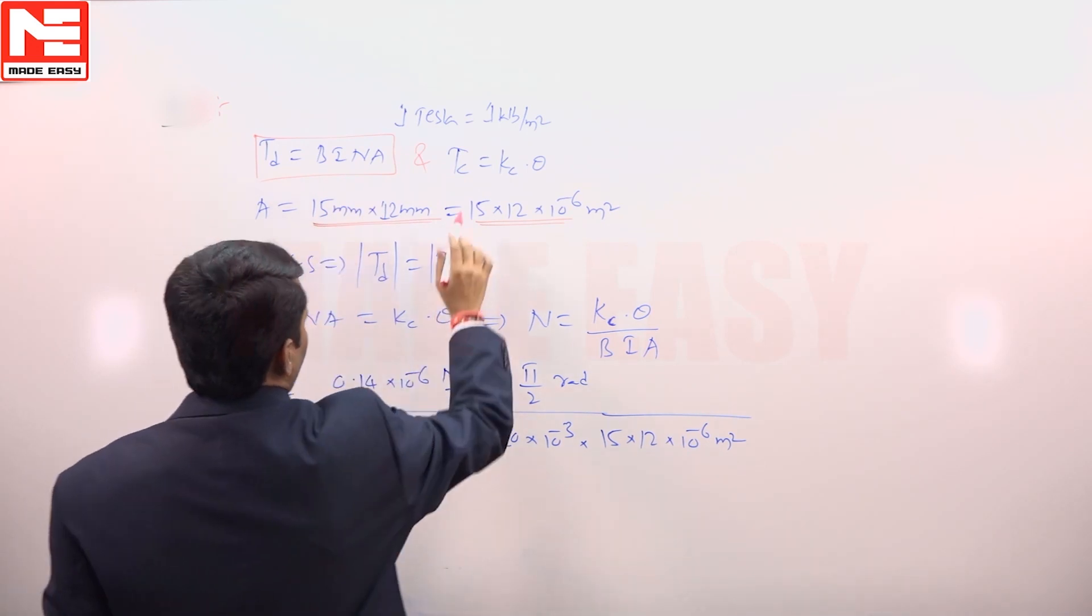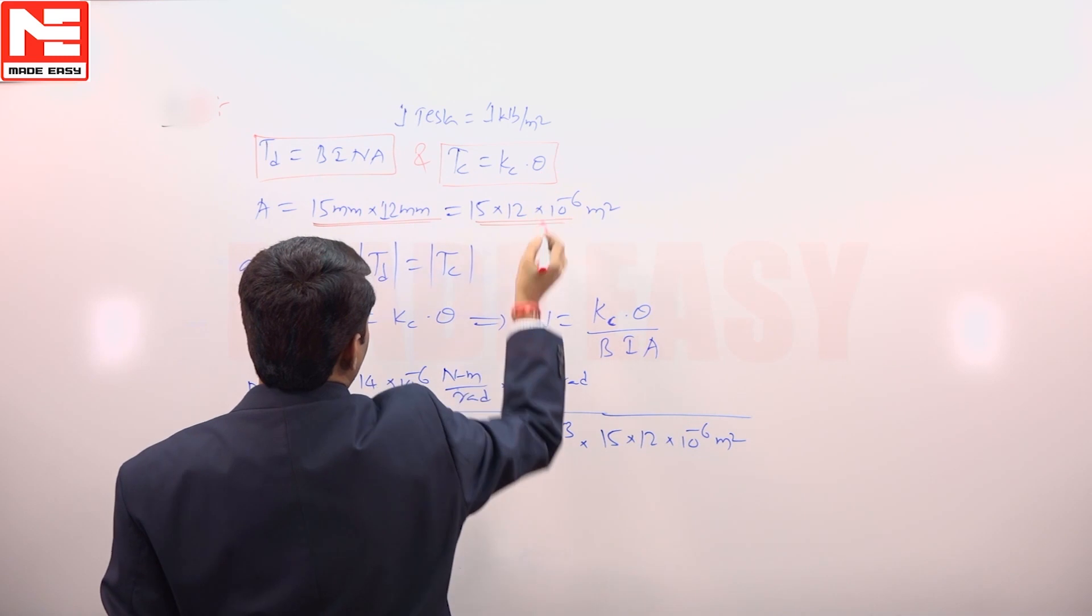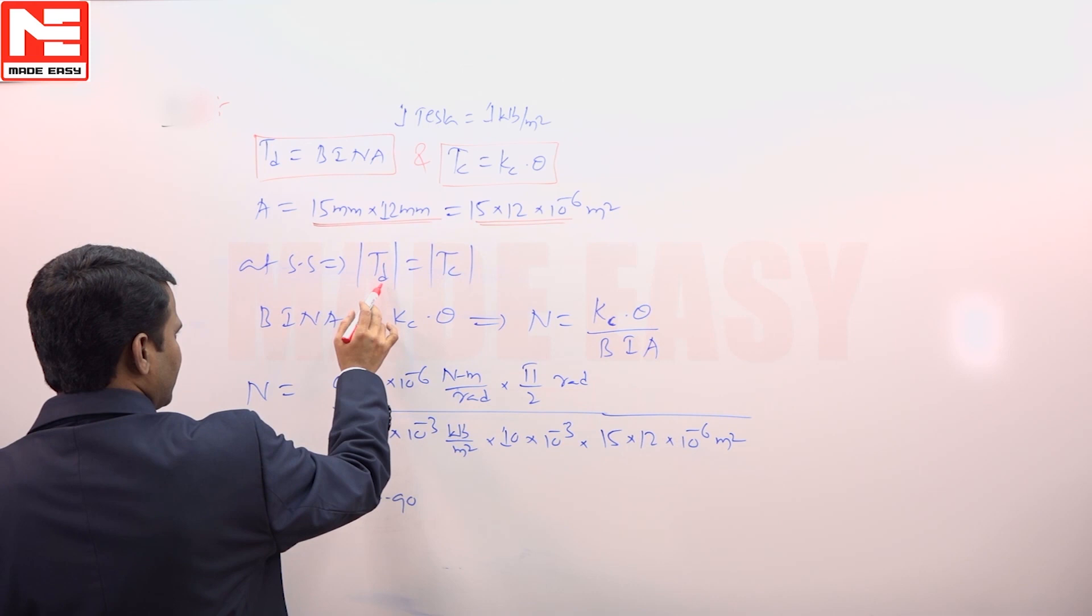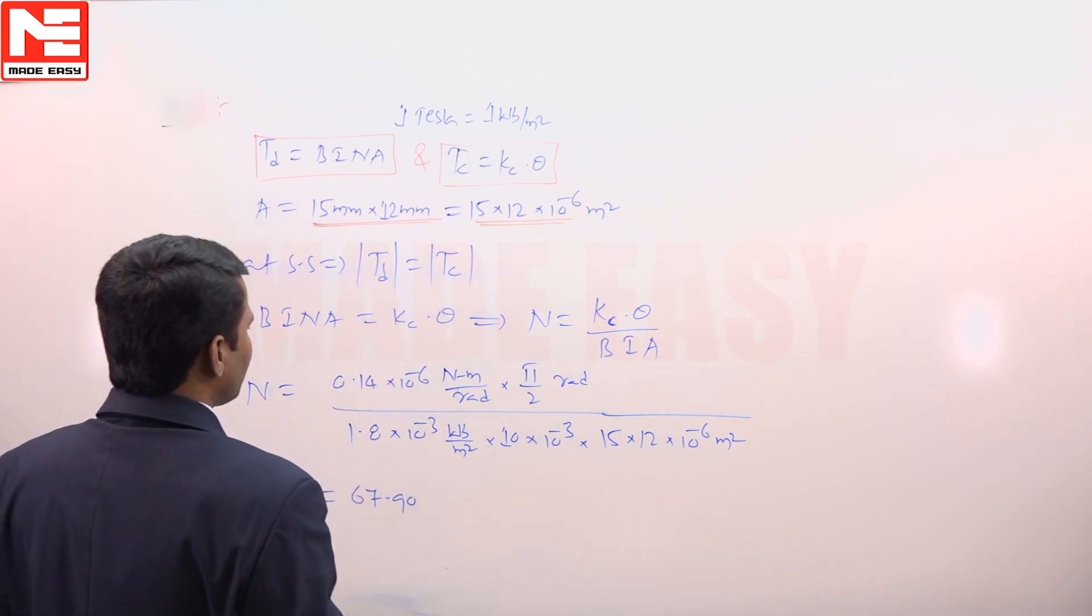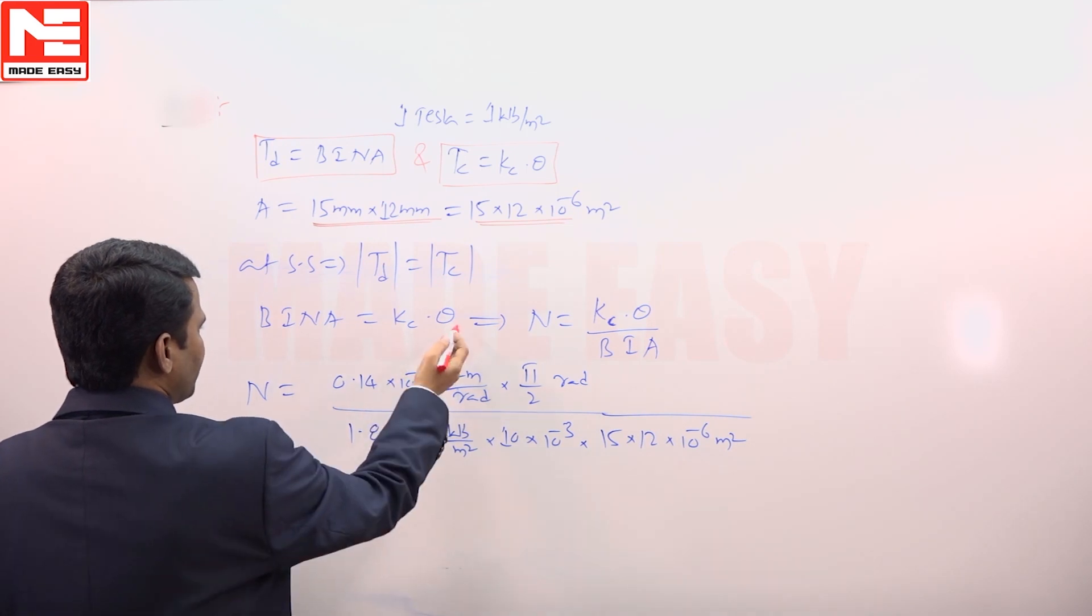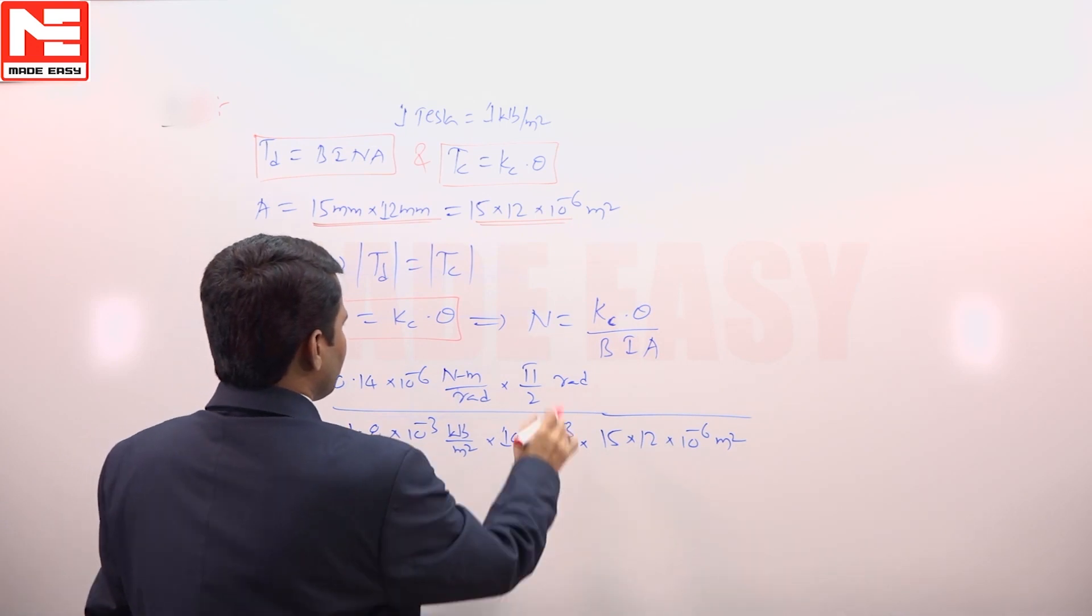B I N A and control torque is equal to Kc into theta because spring control technique is used. At steady state both deflecting and controlling torques are equal in magnitude, but opposite in direction. If I am equating B I N A is equal to Kc into theta, I need number of turns.